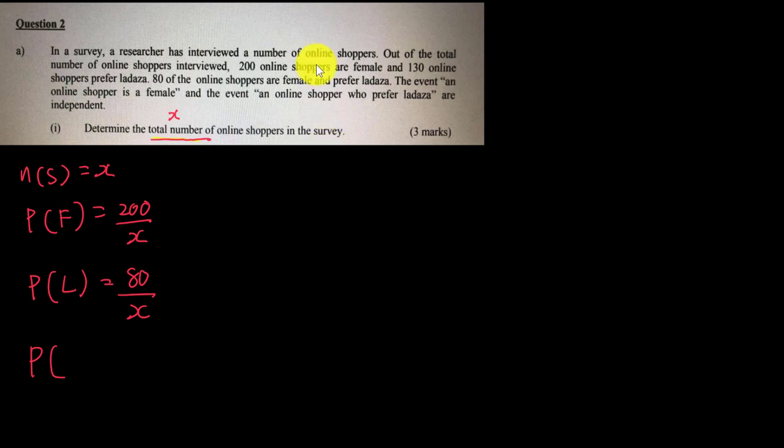Now I want to find the probability that they are female and prefer Lazada at the same time. We have 80 of them, so P(F∩L) will be 80 over x. Wait, this is not 80—this should be 130 because I missed that. We have 130 shoppers who prefer Lazada, so P(L) should be 130 over x. The 80 prefer Lazada and are female, so that's the intersection.